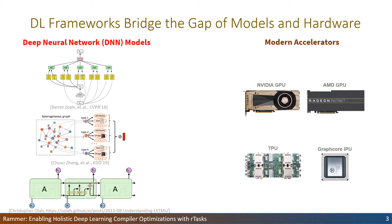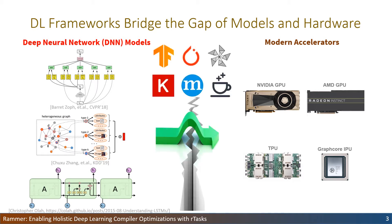On the model side, more and more advanced DNN models are proposed for better accuracy. On another side, many hardware accelerators like GPU, TPU, and IPU are designed for DNN computation. However, there is a huge gap in mapping DNN models to hardware for efficient execution. Fortunately, deep learning frameworks like TensorFlow, PyTorch, and ONNX Runtime are designed to bridge this gap.